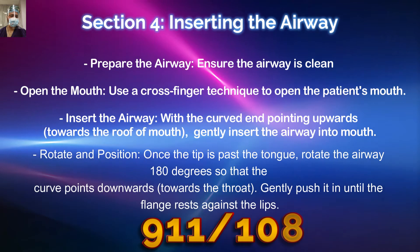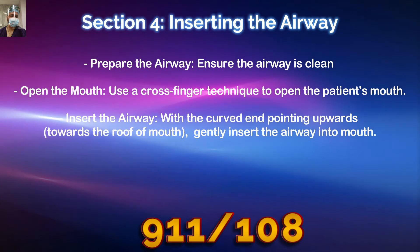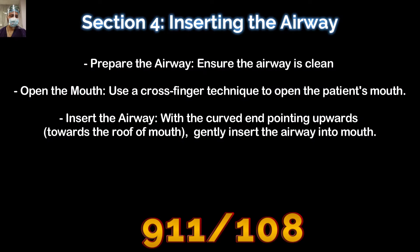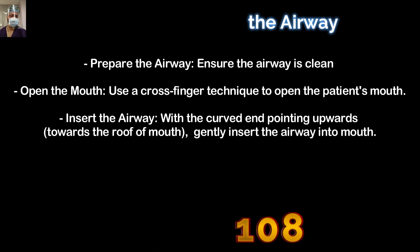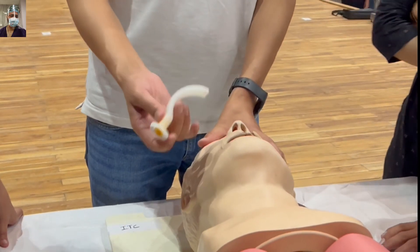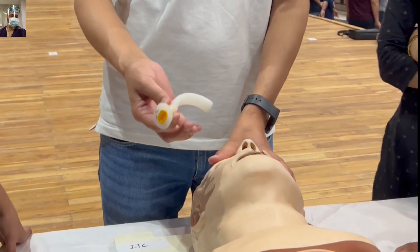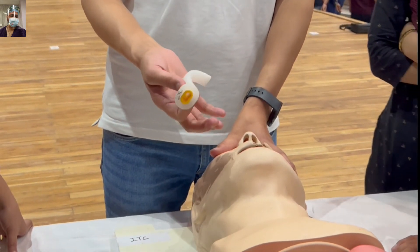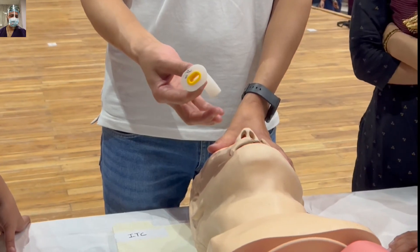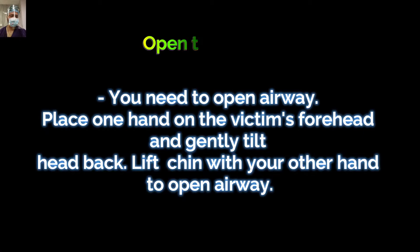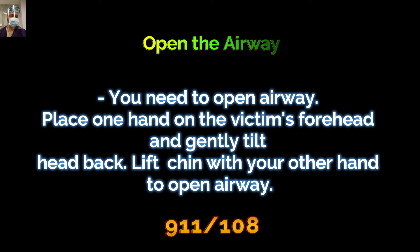The technique for insertion of the Guedel's Airway starts with ensuring the airway is clean — there should be no foreign body or blood in the mouth. If necessary, clean the mouth or apply suction. Then open the mouth using the cross-finger technique, tilt the head back by pushing the forehead back, and lift the jaw and chin upward. That will open the airway.